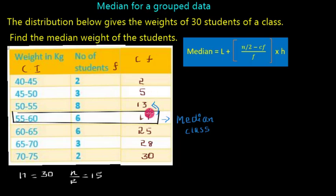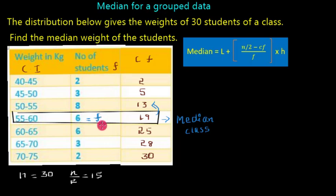In this example, Cf is 13. F is the frequency of the median class interval — be careful, we do not take the cumulative frequency of the median class, but the actual frequency. In this example, 6 is the frequency. H is the size of the class interval, and in this case the value of H is 5.